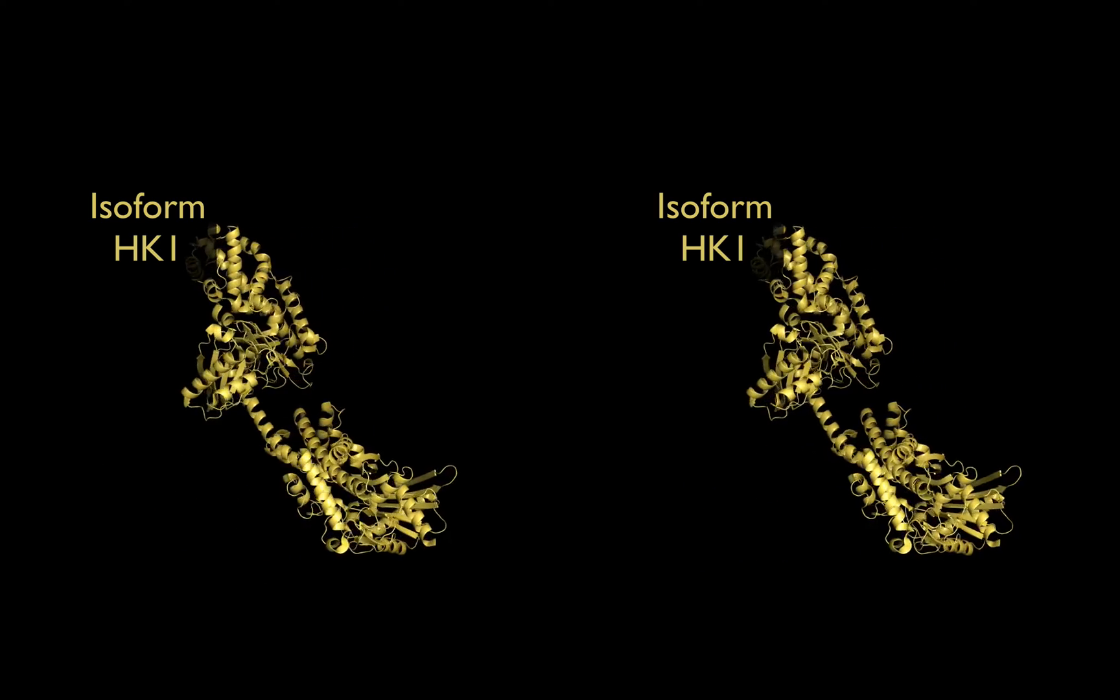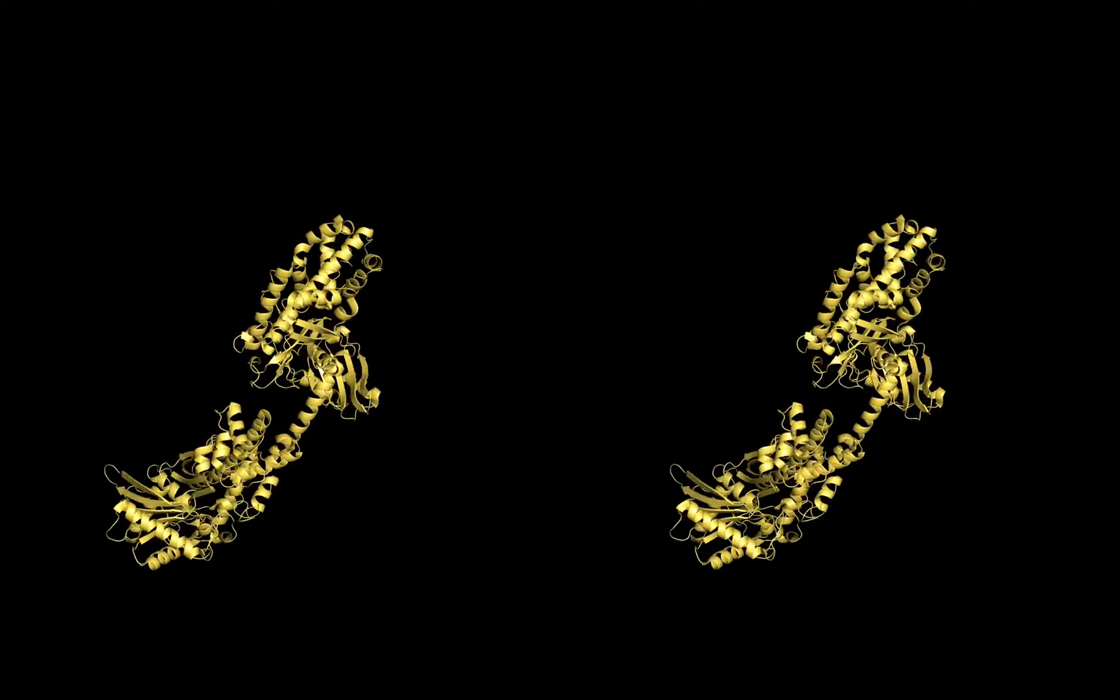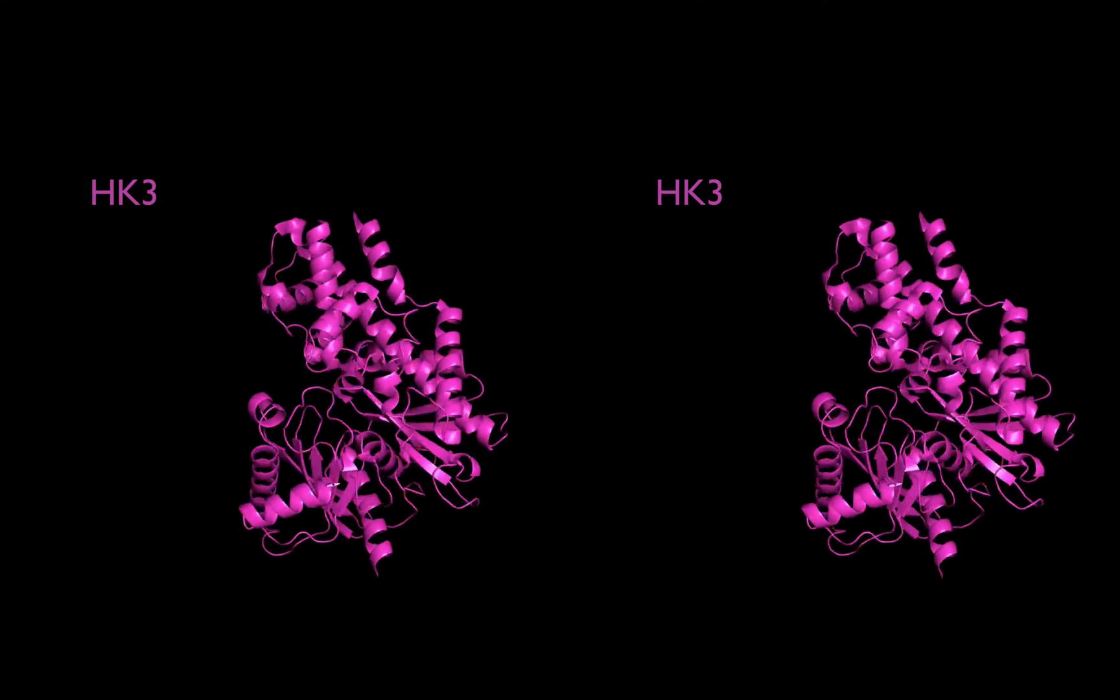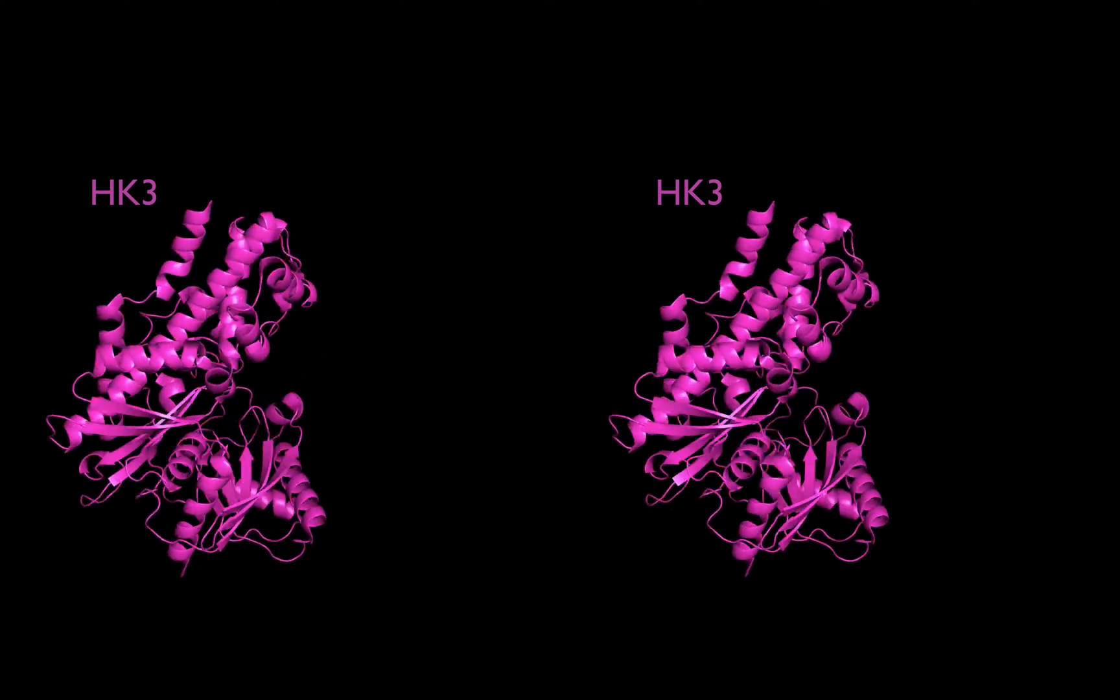Now let's look at hexokinase. There are four isoforms of this enzyme. Isoforms are enzymes that perform the same reaction but have different, though often similar, amino acid sequences.